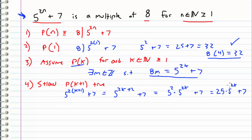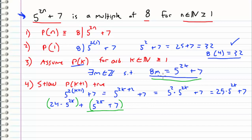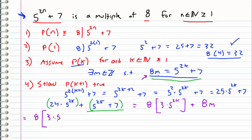Now I'm going to split up the 25 times 5 to the 2k and break it into 24 times 5 to the 2k plus 1 times 5 to the 2k, plus 7. So I have two parts. For the second part — 1 times 5 to the 2k plus 7 — I can substitute in using our inductive hypothesis, since we assumed P of k was true. For the first term, I'm going to factor out an 8. So this becomes 8 times 3 times 5 to the 2k, plus 8 times m, where 8m comes from our inductive assumption. Now I can factor out an 8 from both terms, giving 8 times (3 times 5 to the 2k plus m), where (3 times 5 to the 2k plus m) is an arbitrary constant.